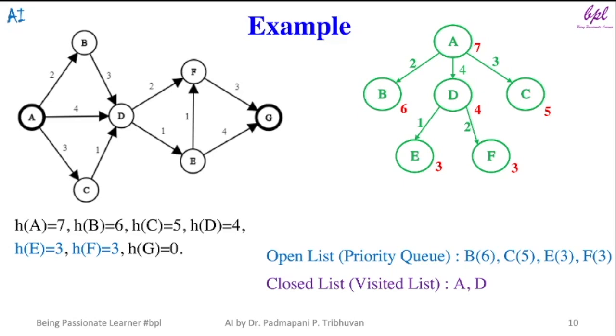E is not goal node so it will be expanded and after expansion, it will be added to closed list. E has two successors: node F and node G.